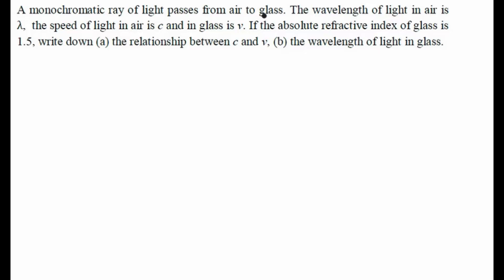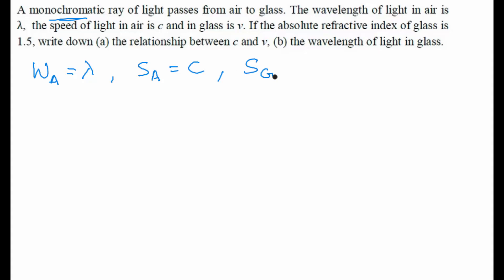A monochromatic ray of light passes from air to glass. Monochromatic means it has light rays of only one wavelength. The wavelength of light in air is lambda, and the speed of light in air is c, and the speed of light in glass is v.